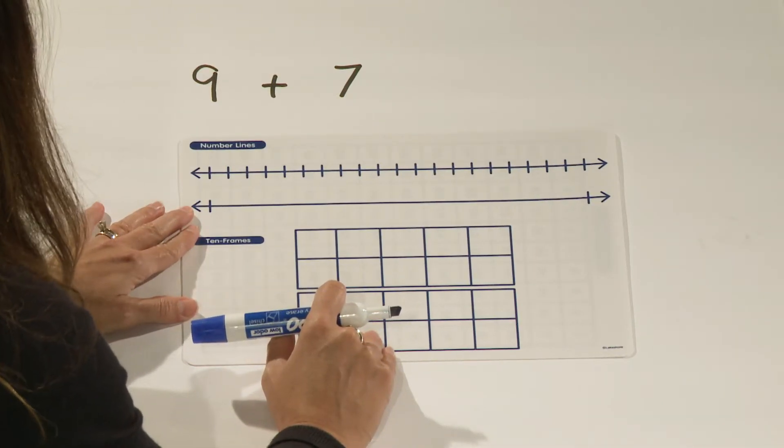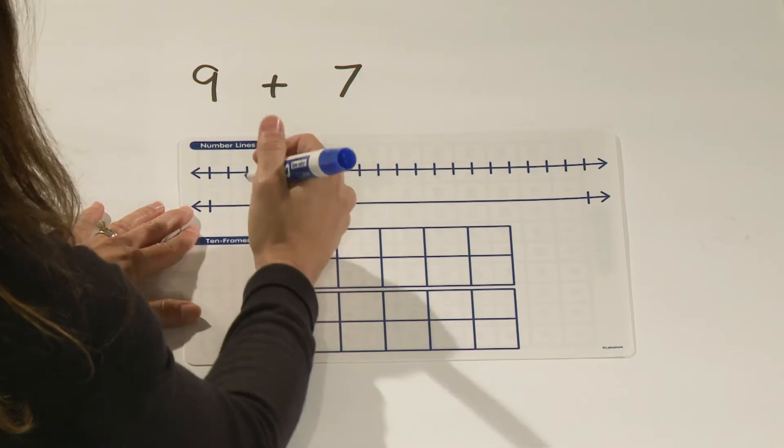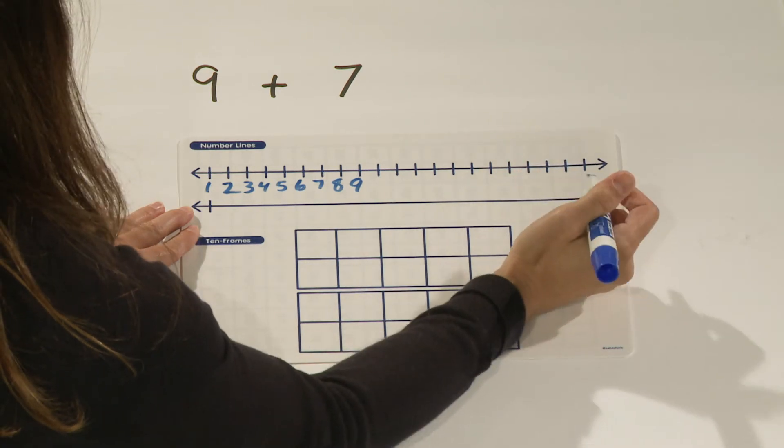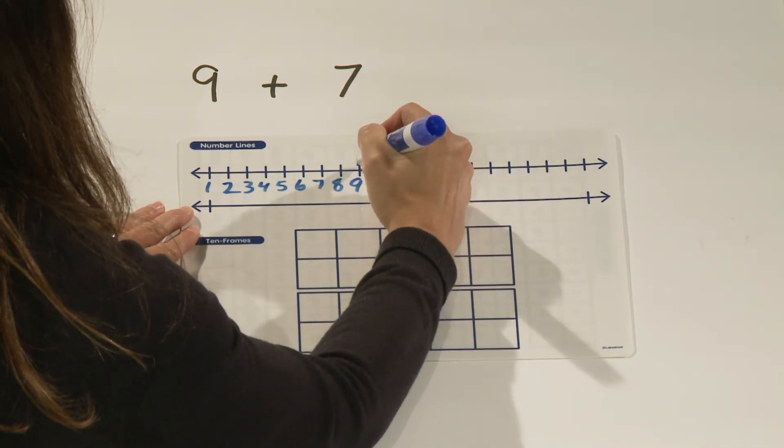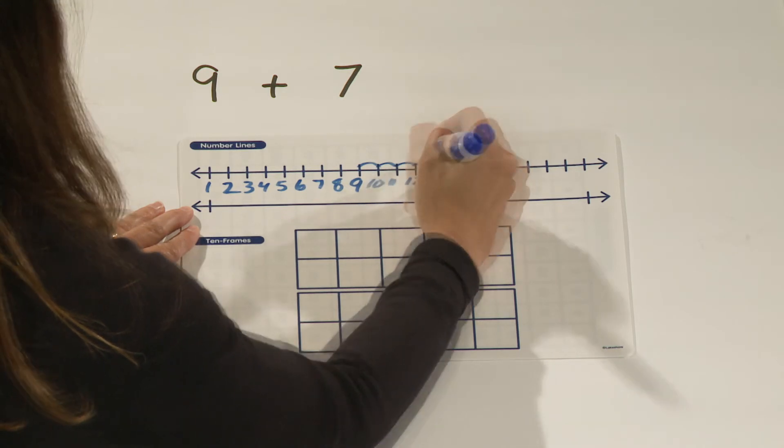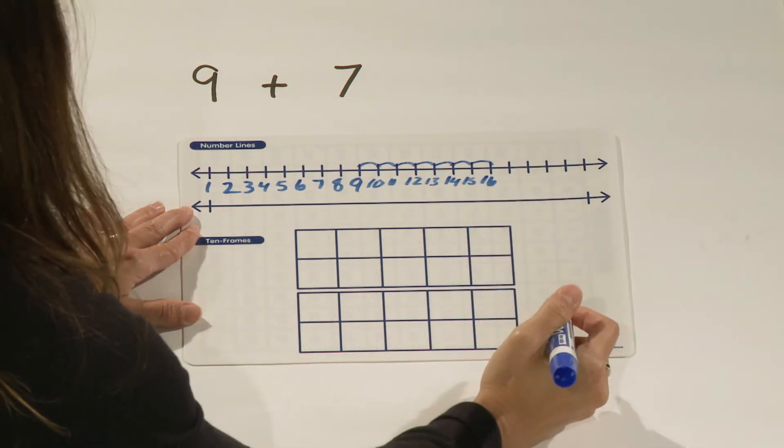Students can also use a number line to solve this addition problem. They can start at 9 and count up 7 to find out that the sum is 16.